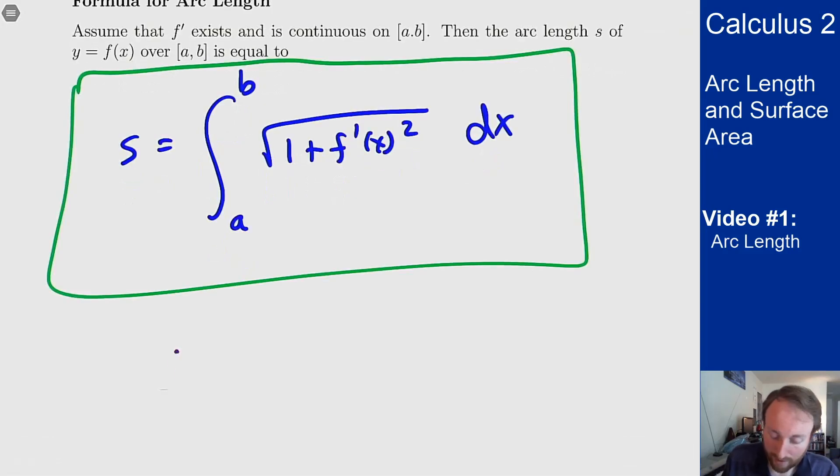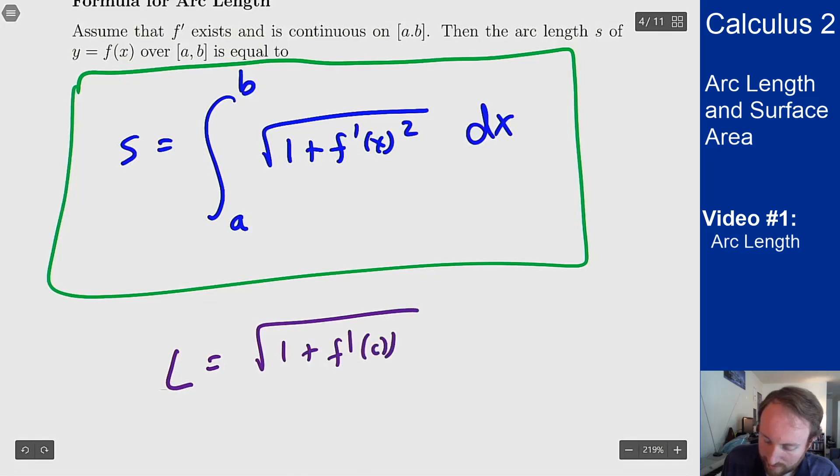What that comes from is the fact that L, what I have for my length before, square root of 1 plus f'(c) squared times delta x, when I add those up and take a limit, that's going to give me exactly this integral. The fact that this function here is the same is why this works.